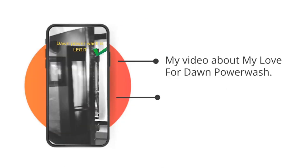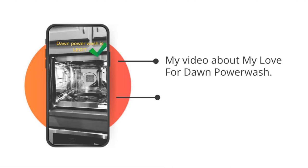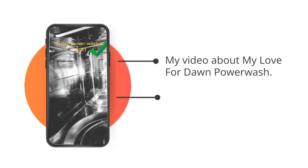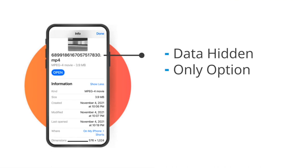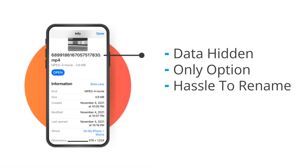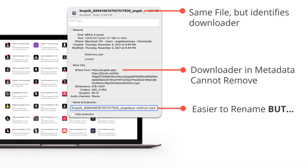Take this video, for example. This is what it looked like when I downloaded it so we can verify there's no watermark — it's just a simple video about my love for Dawn Powerwash, and I used the SnapTik app to download it to my iPhone. However, when you're saving videos to your phone, only part of the data is visible to you. In addition, it's a hassle to rename them, and even if you do change the file name, you cannot change the metadata. I downloaded the same video to my computer and look how much more information is now visible and easily accessible. While I can change the file name more easily here, I still cannot remove the metadata as it shows where I downloaded the video from. That SnapTik app reference would red flag it as a reposted video.